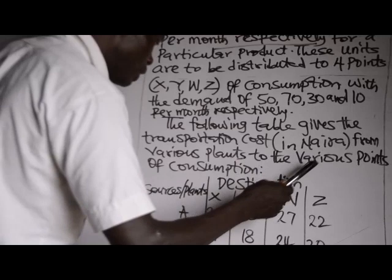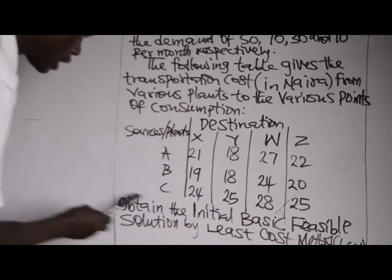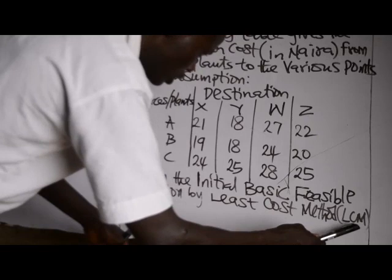The following table gives the transportation cost in Naira from various plants to the various points of consumption. We have destinations X, Y, W, Z and source plants A, B, and C, with costs given. Obtain the initial basic feasible solution by the least cost method.